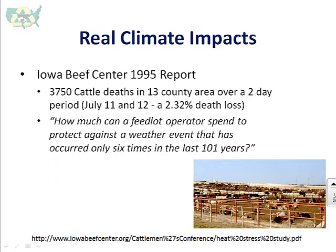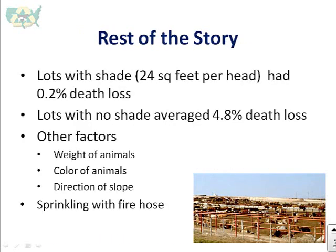There are real climate impacts — we talked about them in the last lesson. This is another one: the Iowa Beef Center 1995 report. There were 3,750 cattle deaths in a 13-county area over a two-day period. It was early in the season, July 11th and 12th, resulting in about a 2.32% death loss. Here's the rest of the story, thinking about how much should be invested by a farmer to prevent these death losses.